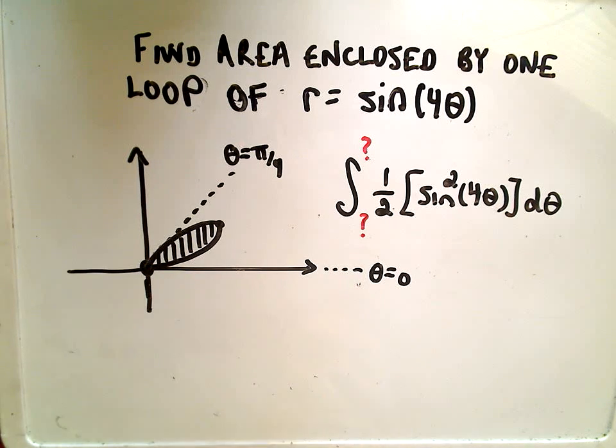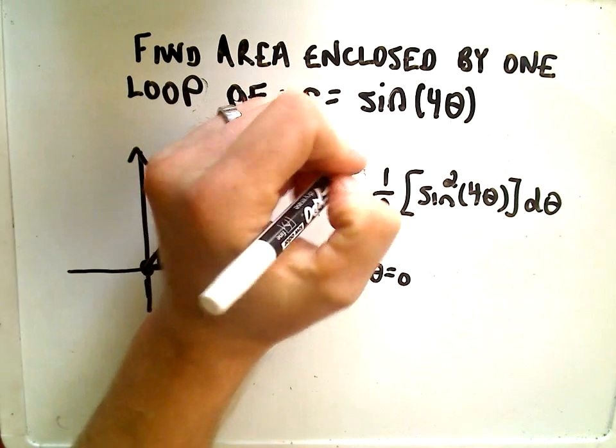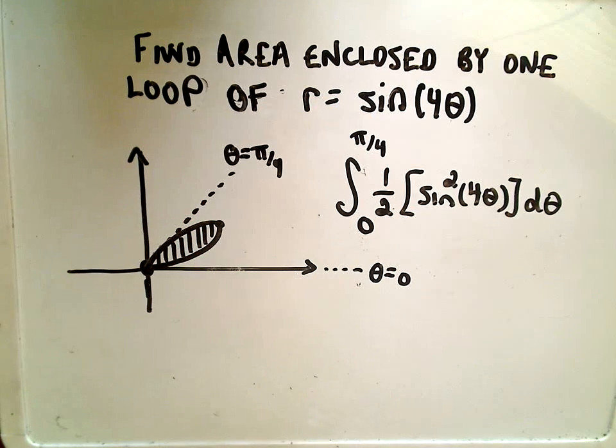I think we've got it now. Our lower limit of integration is going to correspond to theta equals zero. Our upper limit of integration is going to correspond to theta equals pi over four. And now all I have to do is integrate away.